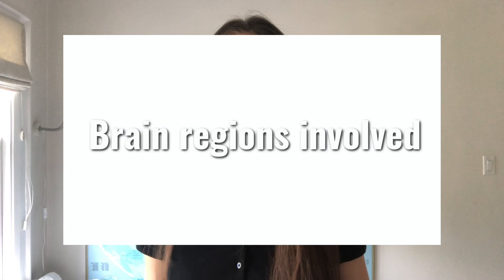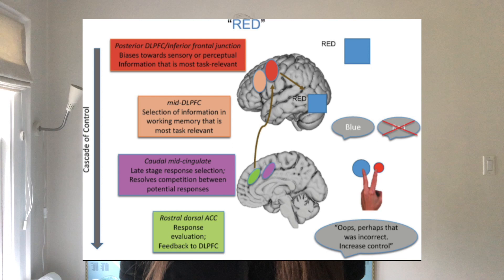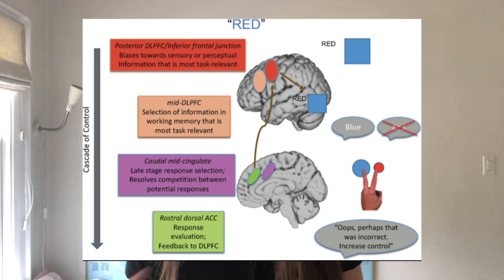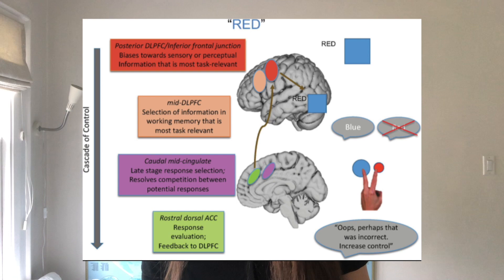When looking at brain regions that are involved in controlling interference during the Stroop test, there are multiple locations in the brain where the Stroop effect occurs. The control occurs in a cascade-like manner, meaning the degree of control used at earlier stages of the process influences the degree of control that needs to be used at later stages. Evidence suggests that lateral prefrontal regions work to bias processing towards the task-relevant dimension of a stimulus, such as the blue ink color, and away from the task-irrelevant dimension like the color word red. Medial prefrontal regions tend to be involved in response-related and late-stage aspects of control.